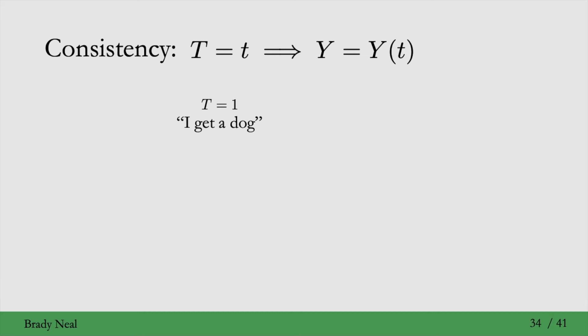And to give you an example of this, consider that T equals 1 means I get a dog, and T equals 0 means I don't get a dog. So it's the same example as the previous slide. Say that if I were to get a golden retriever, I would observe Y equals 1. I would be happy. And this is when I'm taking the treatment. I'm getting a dog.